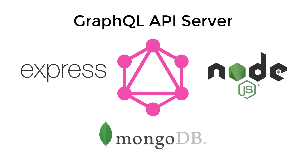Our app will use GraphQL as a middleman between the server and the client, which gives us a number of advantages I'll explain in the next slide. Our client will be a React application that we'll build after this series, but this series is standalone and can be coupled with any frontend technology.